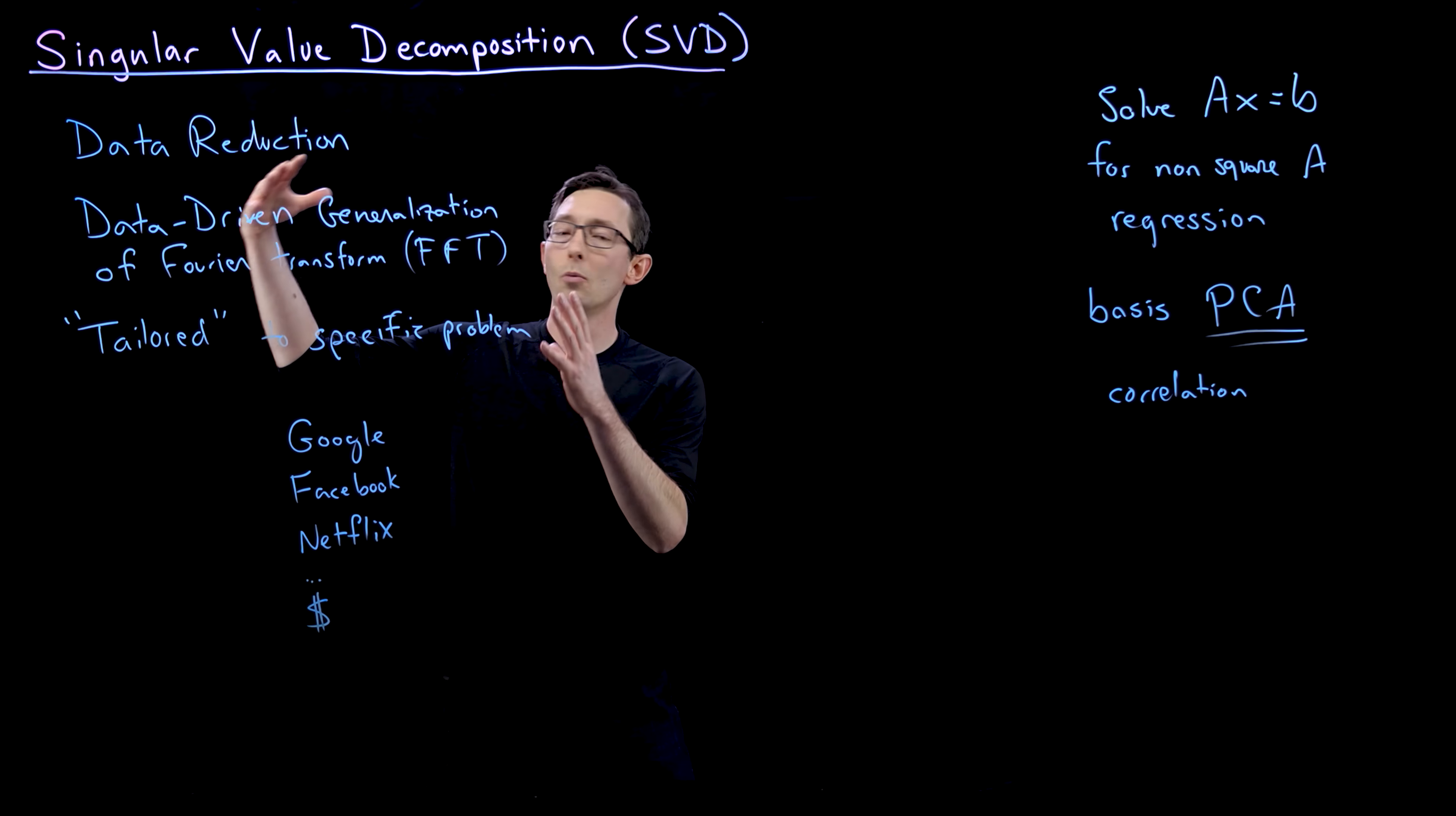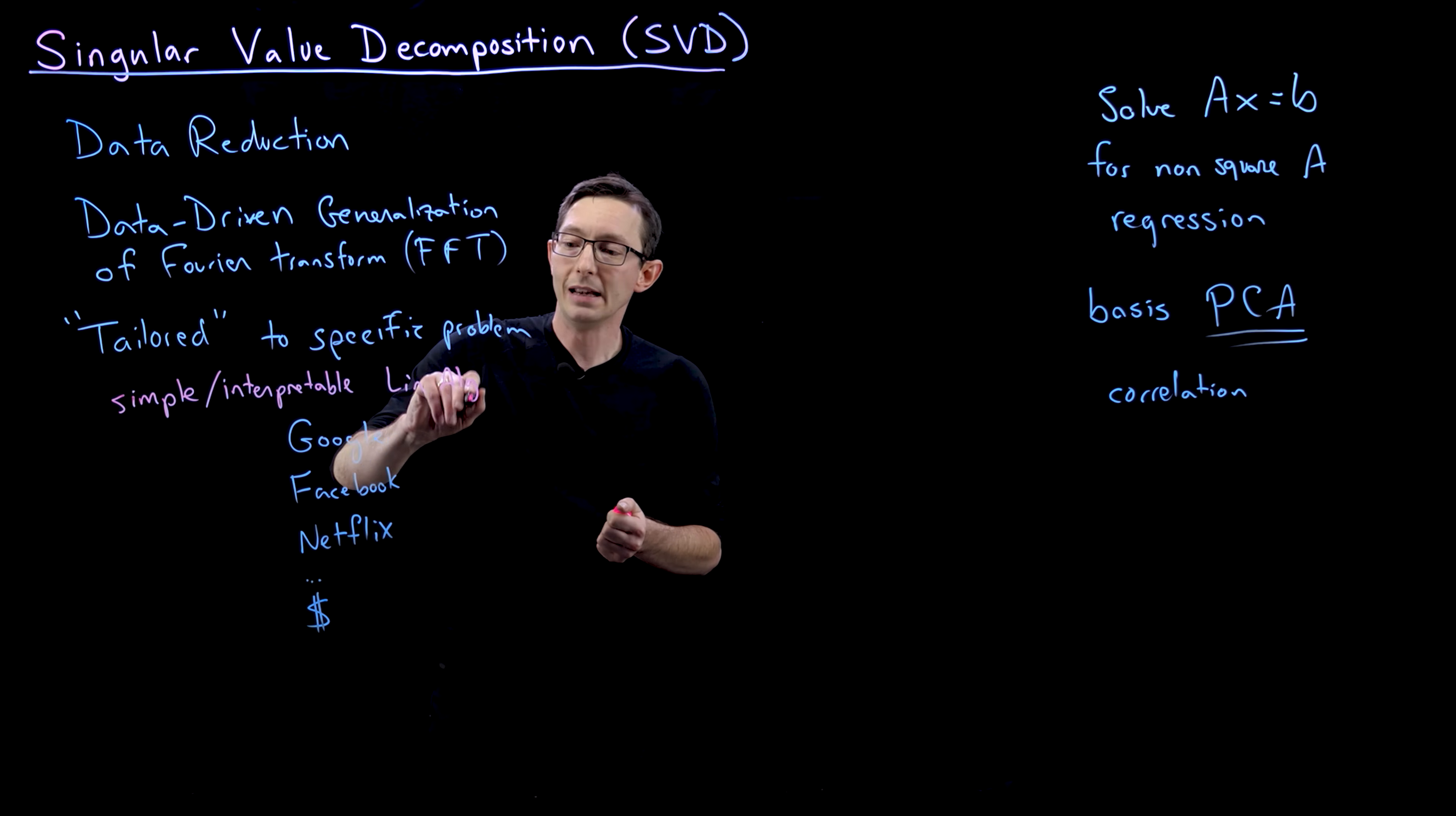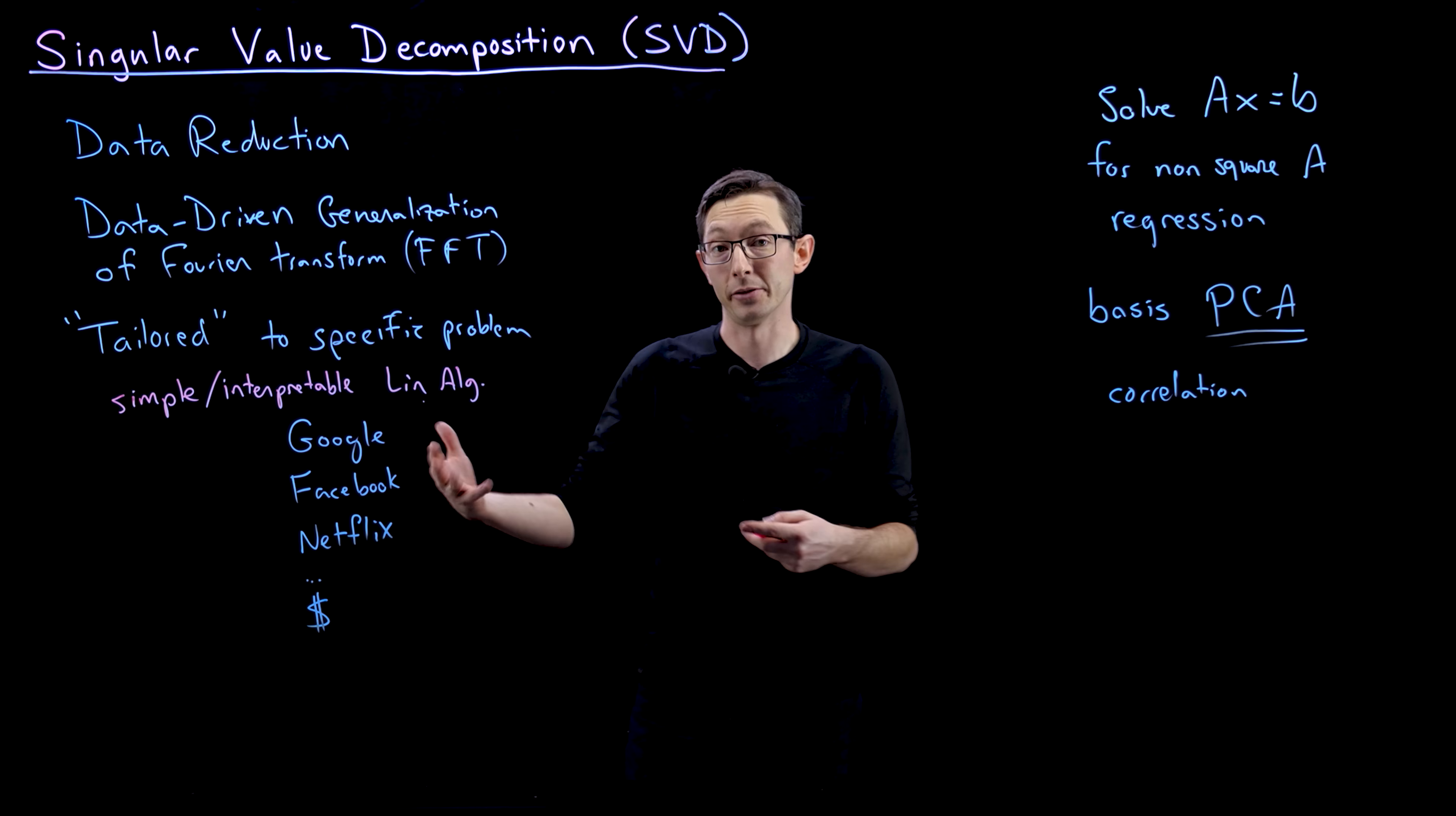Part of the reason it's so widely adopted is because it's based on very, very simple linear algebra, simple and interpretable linear algebra, which means that you can use it really anytime you have a data matrix, you can compute the SVD and you can get interpretable, understandable features that you can then build models on.